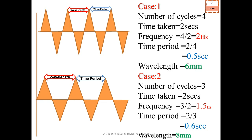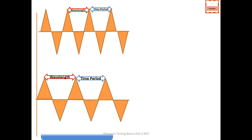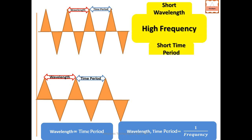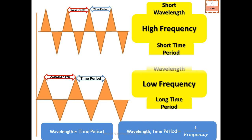Summary: Jab wavelength kam hoti hai, time period bhi kam hota hai, aur frequency zyada hoti hai. Ulta socho - jab wavelength aur time period zyada hota hai, frequency kam hoti hai. High frequency = short wavelength + short time period. Low frequency = long wavelength + long time period.